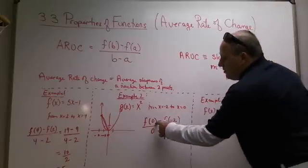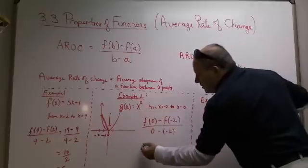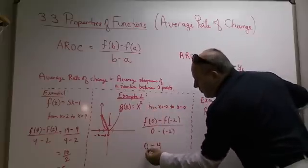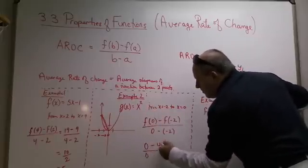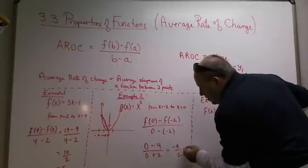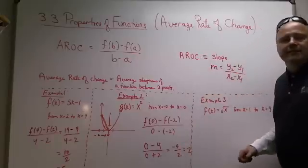So f(0) will be 0 squared, which is 0. Minus f(-2). Negative 2 squared is 4. So it's 0 minus 4. And then 0 minus a negative 2 is 0 plus 2. So it's negative 4 over 2, which is indeed a negative number, negative 2.